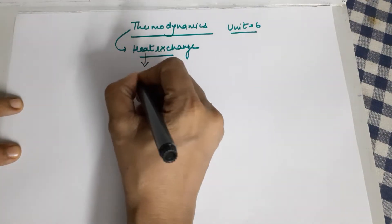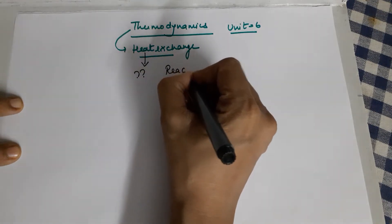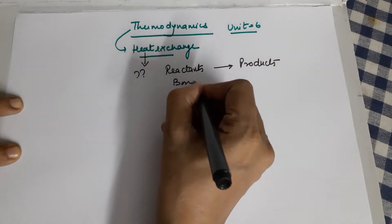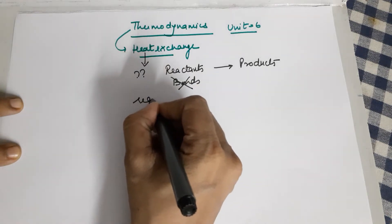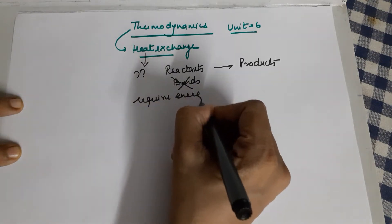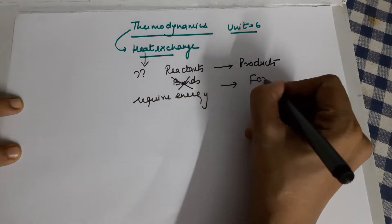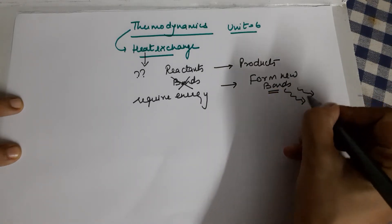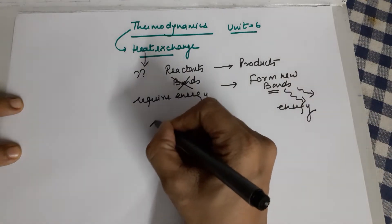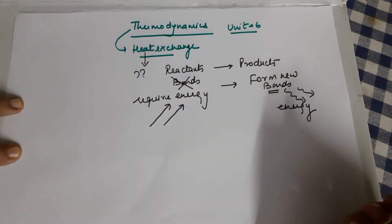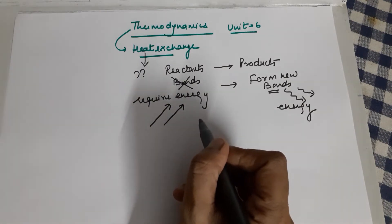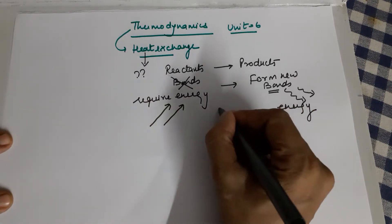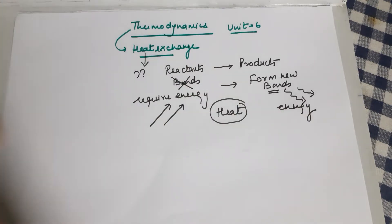Why is heat important in chemistry? In chemistry, your reactants change to products. Whatever bonds are present need to be broken, and this requires energy. In the products, you form new bonds and bond formation always releases energy, which means in any chemical process on the reactant side you require energy, while when products are formed energy is released. There are definitely energy changes involved, generally in the form of heat.